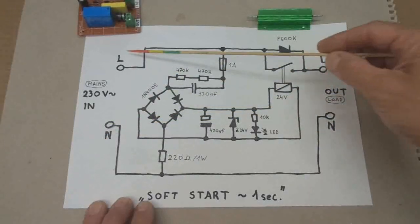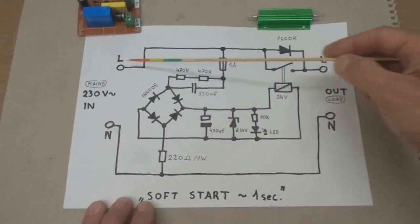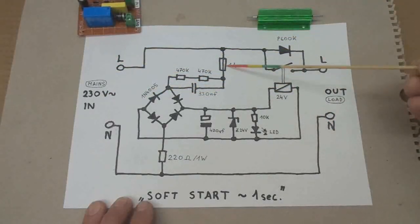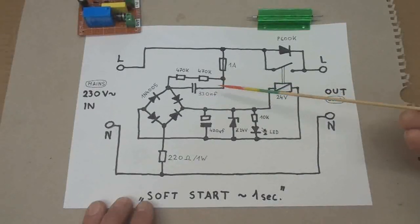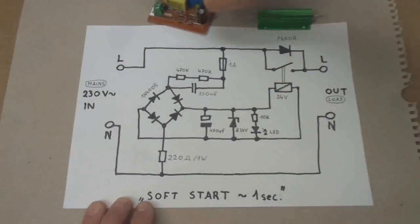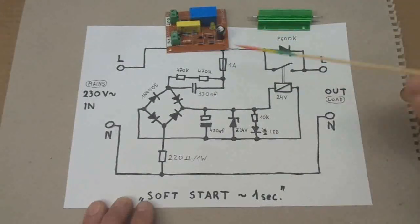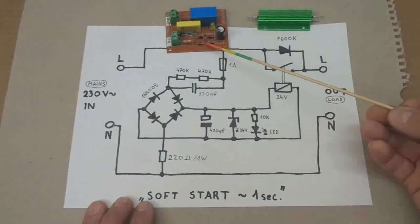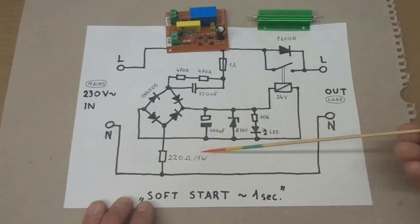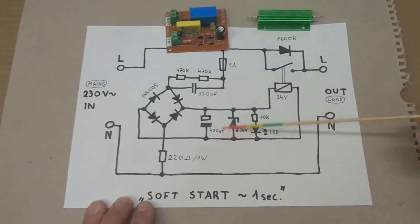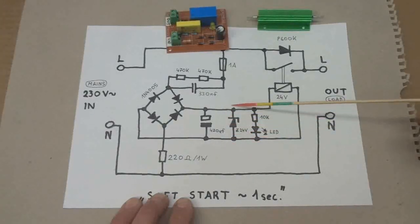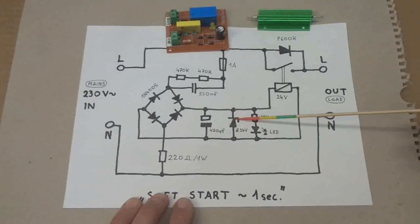So here is your 230 volt incoming supply from the power switch of your machine. It goes via a 1 amp fuse and a 330 nanofarad capacitive dropper here through a bridge rectifier. In this case it's a discrete bridge rectifier here, the four diodes charges up an electrolytic capacitor.